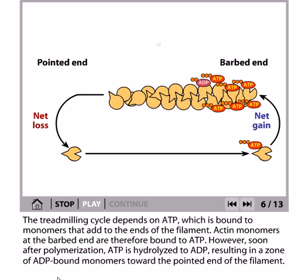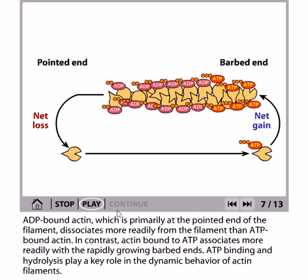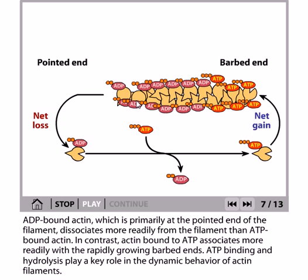The treadmilling cycle depends on ATP, which is bound to the monomers that add to the ends of the filament. Actin monomers at the barbed end are therefore bound to ATP. However, soon after polymerization, the ATP is hydrolyzed to ADP, resulting in a zone of ADP-bound monomers towards the pointed end of the filament, as you can see in this picture. This ADP-bound actin, primarily at the pointed end, dissociates more readily from the filament, whereas actin bound to ATP associates more rapidly with the growing barbed end.